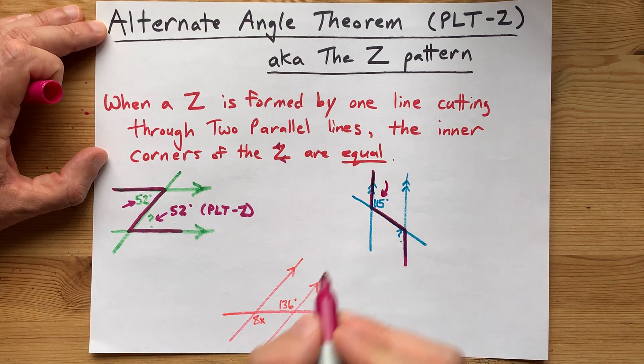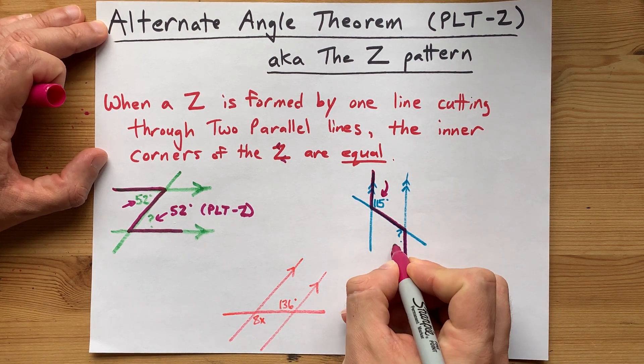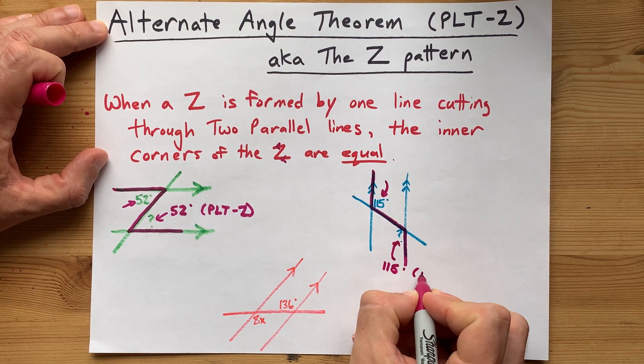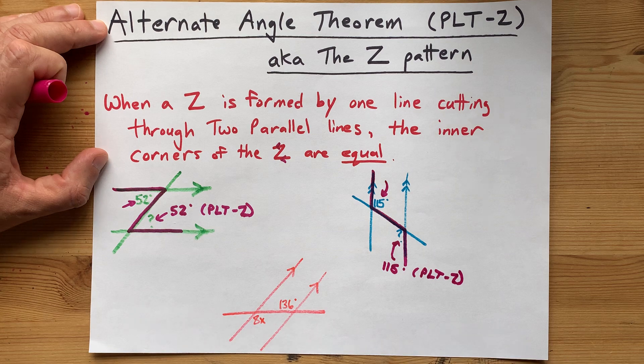This inner corner, the 115, is equal to this inner corner. Also has to be 115 by PLT-Z. Nice.